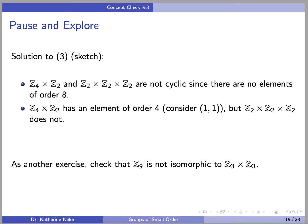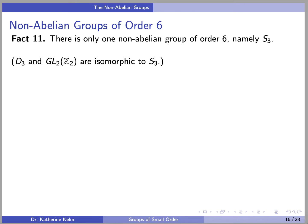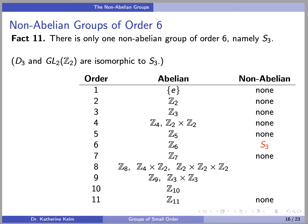If you would like another similar exercise, check for yourself that Z9 is not isomorphic to Z3 cross Z3. Fact 11: there is only one non-abelian group of order 6, namely the symmetric group S3. There are other familiar non-abelian groups of order 6, namely D3 and GL2(Z2), which is the group of 2 by 2 invertible matrices with entries in Z2, but these groups are all isomorphic to S3.